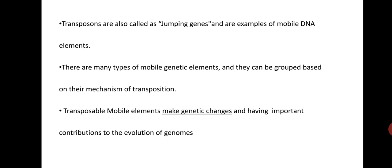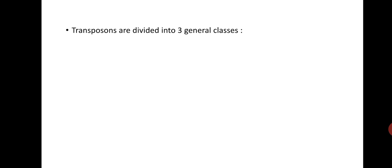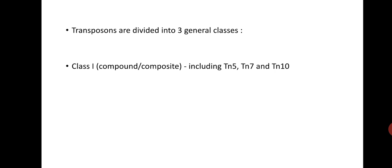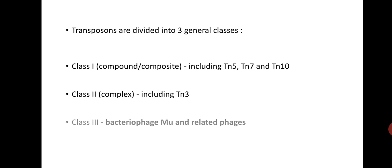Transposons are divided into three general classes. Class 1 is compound or composite, which includes Tn5, Tn10, and Tn7. Class 2 is more complex and includes Tn3. Class 3 is the bacterial phage mu and related phages, which is what we are going to focus on today.